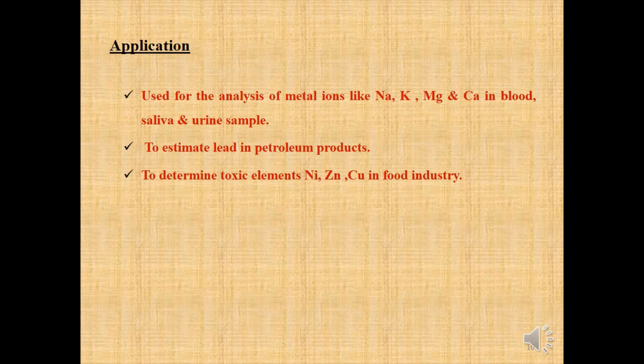Applications of atomic absorption spectroscopy: It is used for analysis of metal ions like sodium, potassium, magnesium, and calcium in blood samples, saliva, and urine samples. It is also used to estimate the amount of lead in petroleum products. It is used to determine toxic elements such as nickel, zinc, and copper in the food industry.